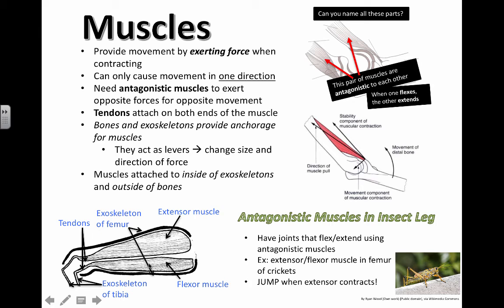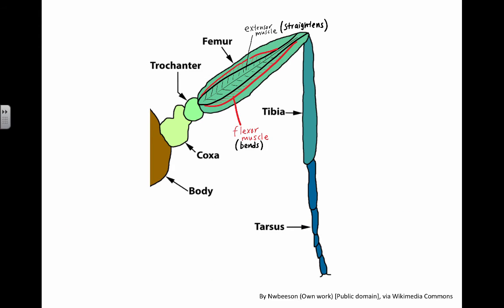So in this case, you can see that the extensor muscle is the one that really provides the contracting force to cause this little bug, this little cricket to be able to jump so high, right? Here's a close-up look at that. Fancy, very beautiful. By N.W. Beeson. Congratulations on drawing this awesome diagram.